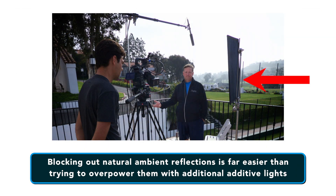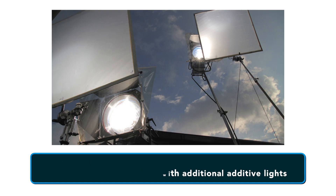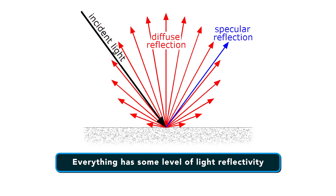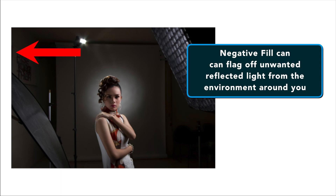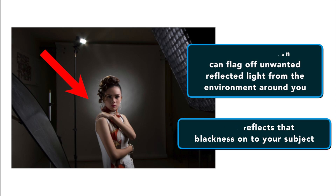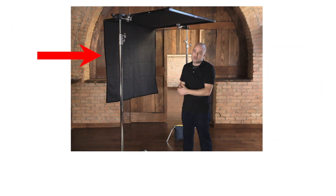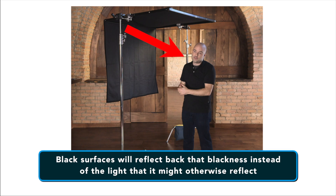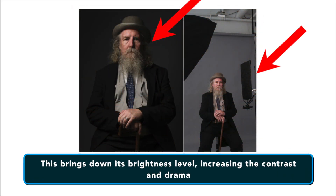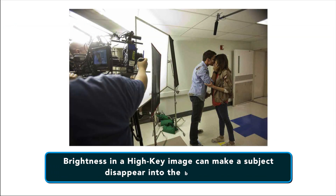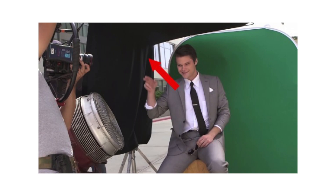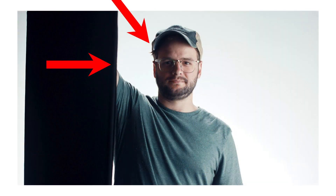Blocking out some of those natural ambient reflections is far easier than trying to overpower them with additional additive lights. Just about everything we come into contact with daily has some level of reflectivity, so using negative fill can have a double effect. First, it can help flag off unwanted reflective light from the environment, but also reflects that blackness onto your subject. Holding up a black board or material essentially means that surfaces will be reflecting back blackness instead of light, bringing down brightness and increasing the contrast and drama. The most pronounced need for negative fill is when you're shooting a light subject against a light background. With a bit of negative fill from a black card or flag positioned on the sides of the subject or just out of frame, you'll create a dark edge to define the subject and separate it from the background.